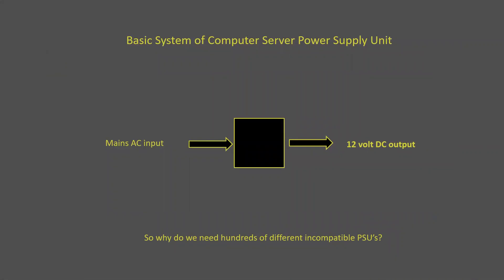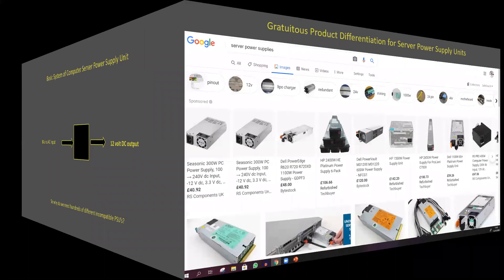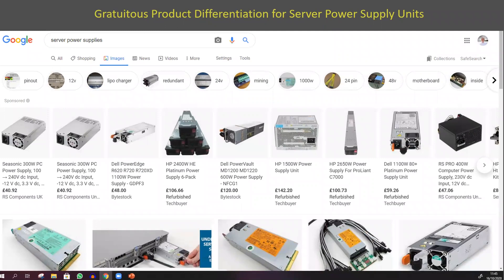Another thing I want to touch on is users driving open source tech hardware. They're trying to remove what's called gratuitous product differentiation and simplify everything. Here we have a basic computer server power supply unit — a black box that takes mains AC input and gives you a 12-volt DC output. Why do we need hundreds of different incompatible power supply units? If you go on Google and search images for server power supplies, you will get hundreds and hundreds, all completely and gratuitously differentiated from each other, so they can't be used between machines, even within the same vendor.